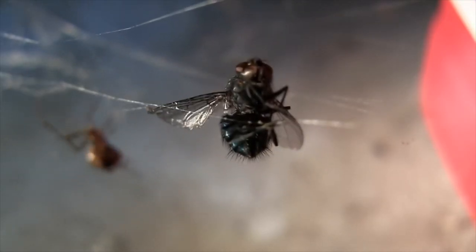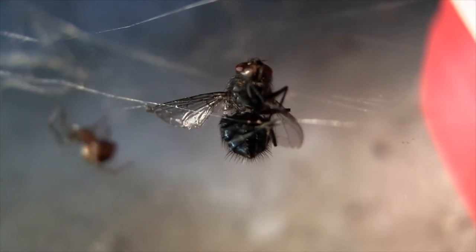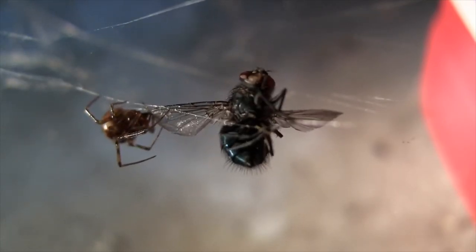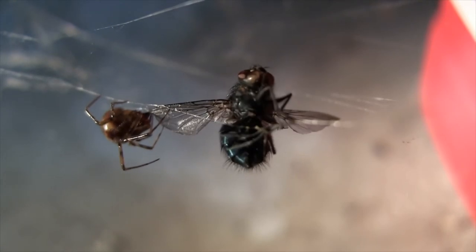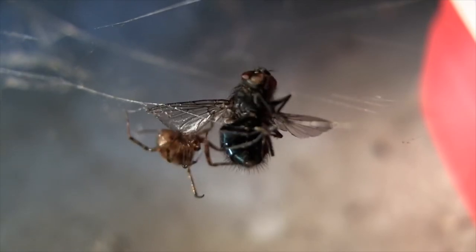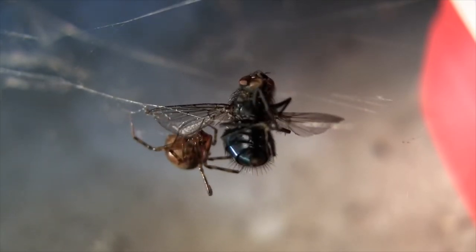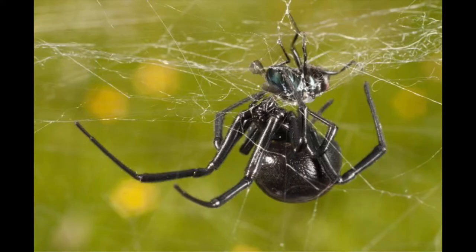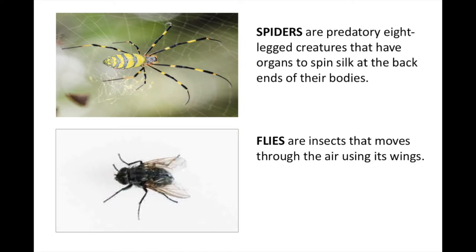Another interesting relationship is between the spider and the fly. Flies usually get trapped on the spider's web and try to escape before the spider attacks. The intruder becomes an easy free meal to the spider, who tries to spin its web around the fly before eating it. The spider is the predator that hunts, catches, and eats the fly, which is the prey. Often the prey gets attacked and eaten in the process. In this relationship, one benefits while the other is harmed or killed.